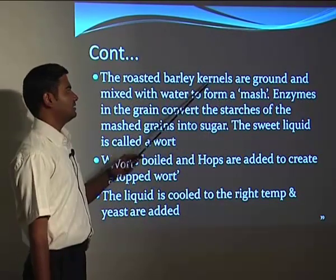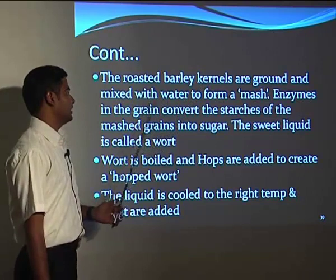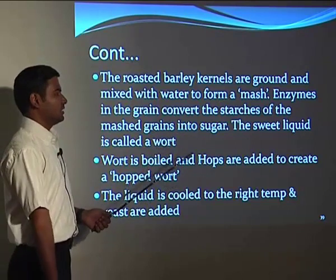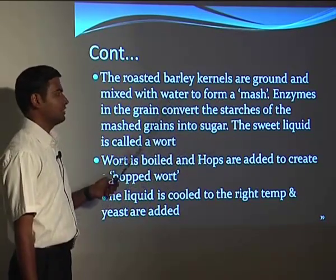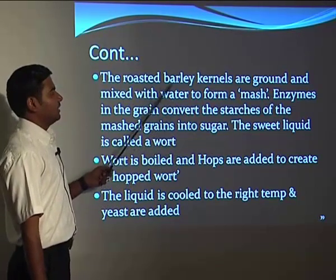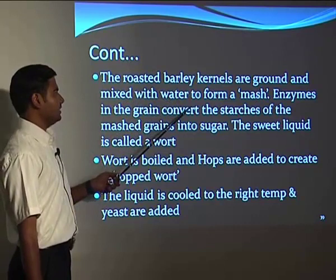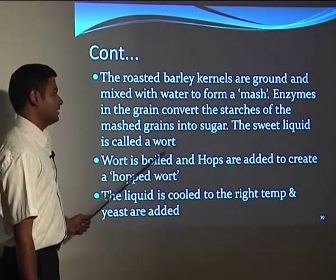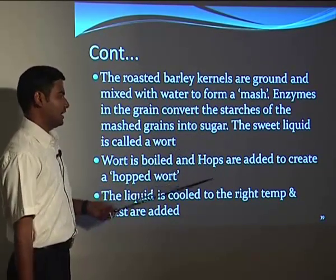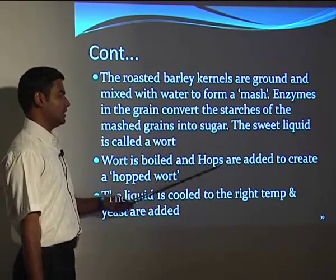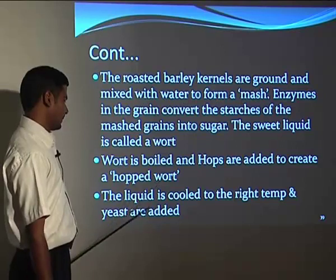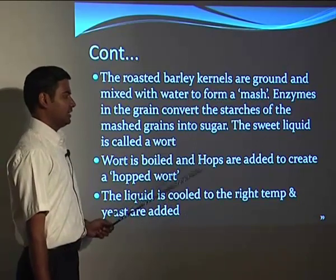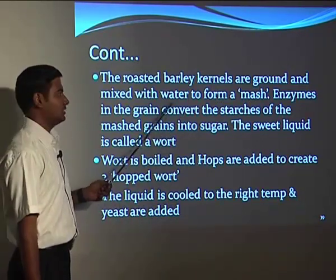After roasting, the barley is ground and mixed with water to form a mash. Enzymes in the grain convert the starches in the mash into sugar; the sweet liquid is called the wort. The wort is boiled and hops are added to create a hopped wort — the hops give the beer its taste. The liquid is then cooled to the right temperature and yeast is added, which further ferments the sugars produced in the mash.